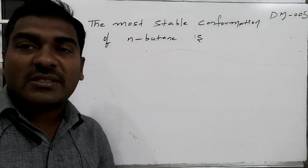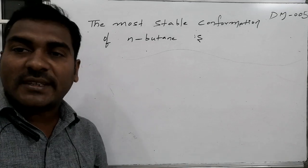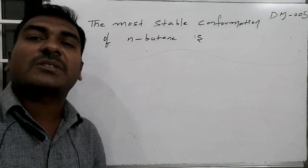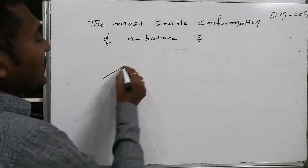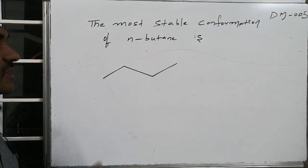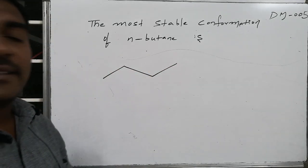The most stable conformation of n-butane is what is the most stable conformation of n-butane. If I go for n-butane, this is n-butane system, that is 4 carbon atoms are present linearly.